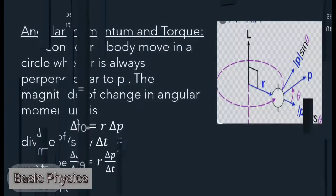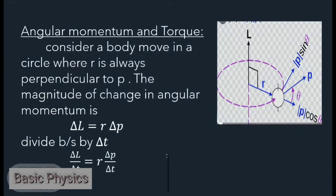Angular momentum and torque: Consider a body moving in a circle where r is always perpendicular to p. The magnitude of change in angular momentum is delta L equals r delta p.